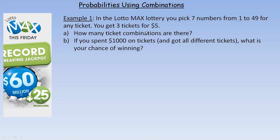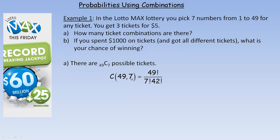This is a combination question, not a permutation question, because it doesn't matter what order you want the numbers to be — it's still the same ticket. Changing the order of the same 7 numbers does not make a different ticket. So the number of ticket combinations would be 49 choose 7. And 49 choose 7 would be 49 factorial divided by 7 factorial, and then also 42 factorial. You can divide out the factorials like this and get 85,900,584.